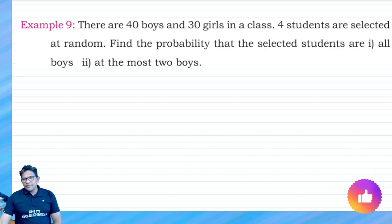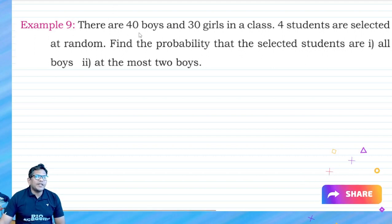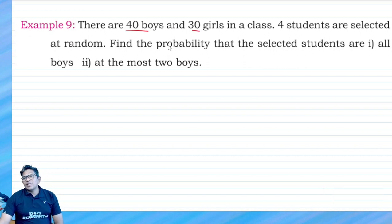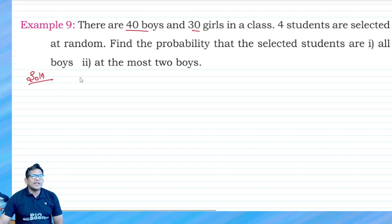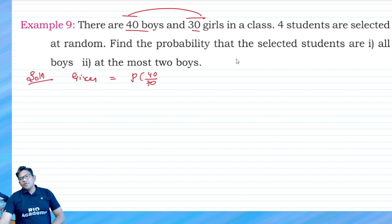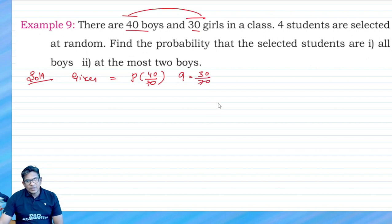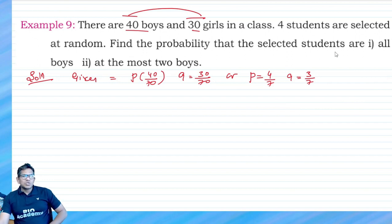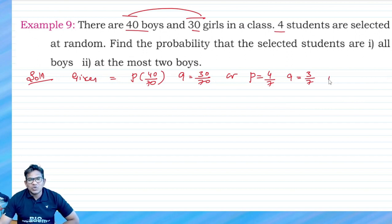The problem is: there are 40 boys and 30 girls. So p is equal to 40 by 70 — because 40 plus 30 is 70. So p equals 4 by 7, and q equals 3 by 7. Four boys are selected, so n is equal to 4.